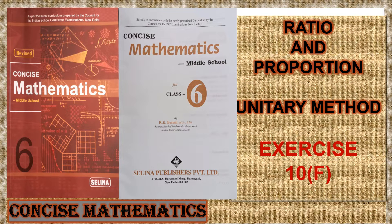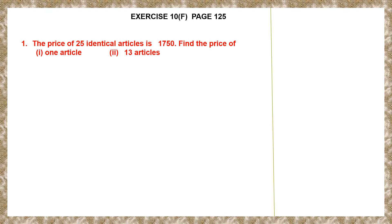Hello students, let's do ratio and proportion unitary method in this exercise. Exercise 10F, page number 125, and we are going to work out sums on the unitary method. The method in which we first find the value of one quantity and then use it to find the value of the required quantities is called the unitary method. So, we need to always find the value of that one quantity first.